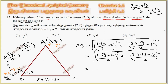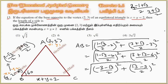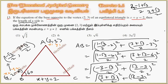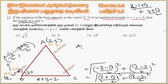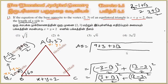So we have minus 3 minus root 3 by 2 whole square, plus root 3 minus 3 by 2 whole square. Expanding using (a plus b) whole square: 9 plus 3 plus 2 root 3 over 4, plus 3 plus 9 minus 2 root 3 over 4. The 2 root 3 terms cancel, giving total 12 plus 12 equals 24 by 4. So the answer is option 3.